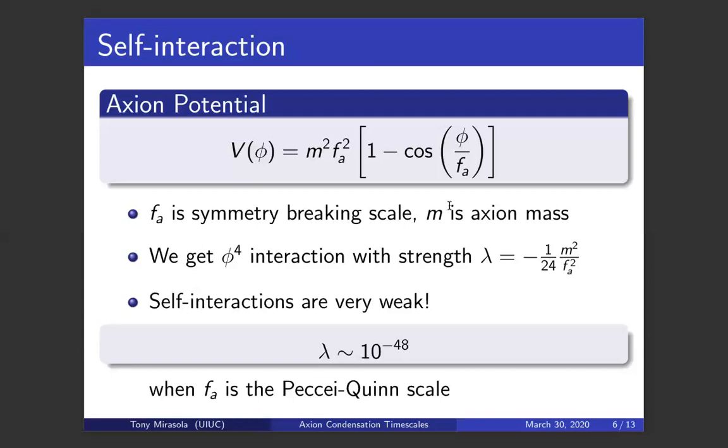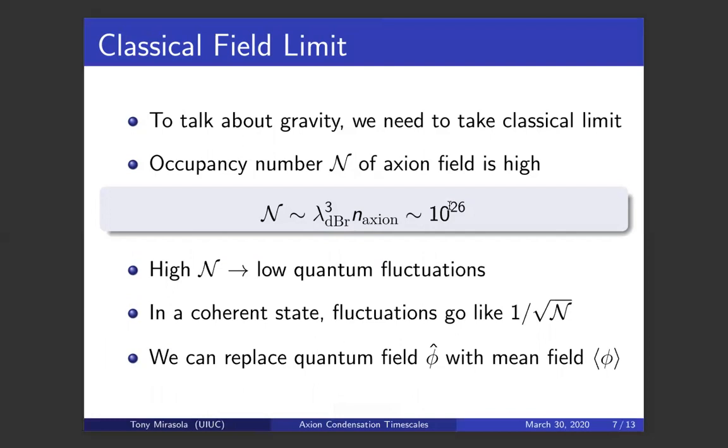But in order to talk about gravity, we need to take a number of approximations that are thankfully well justified to make discussing the coupling to gravity easier. The first of these is that we're going to be looking at the classical field limit of the axion field.